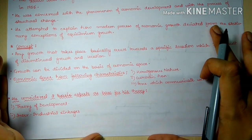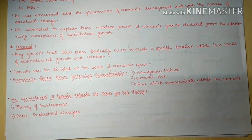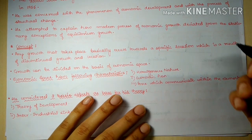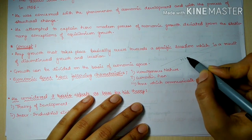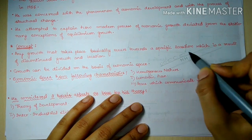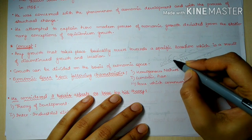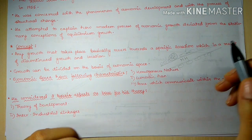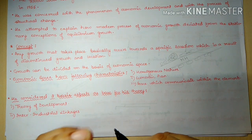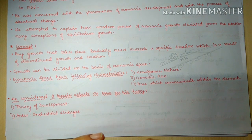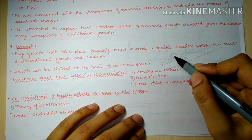The growth pole theory states that any growth that takes place basically occurs towards a specific location, which results in discontinuous growth. Like we have a national highway - the areas around it develop, but not all areas develop equally. Some clusters may build up very large industries while others are left vacant. So this concept says that growth is in the form of a cluster - it is discontinuous, not uniformly distributed.